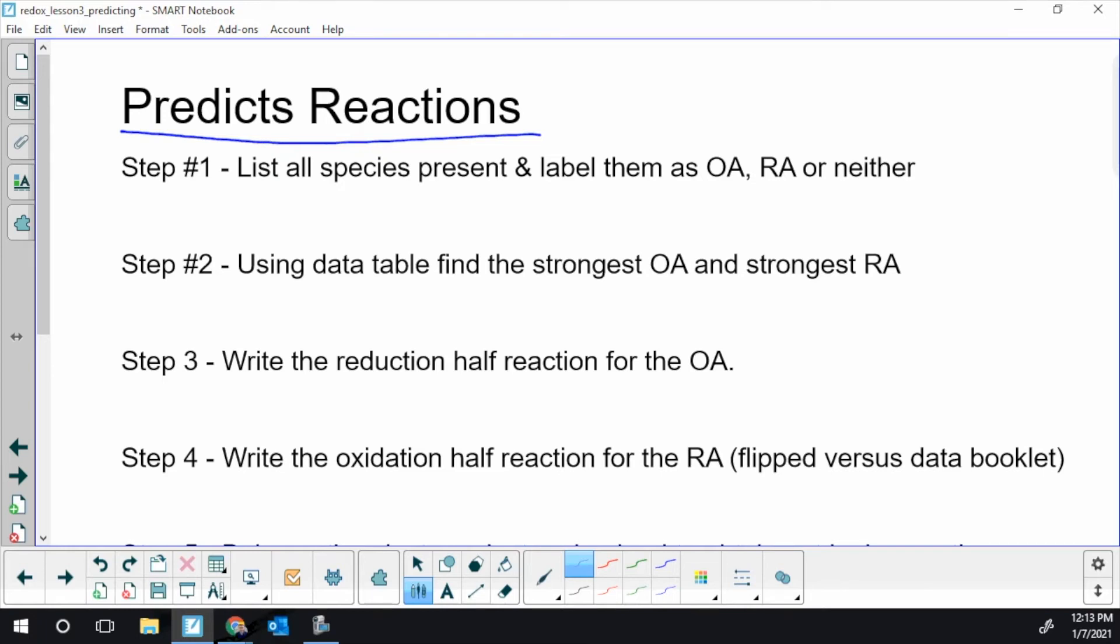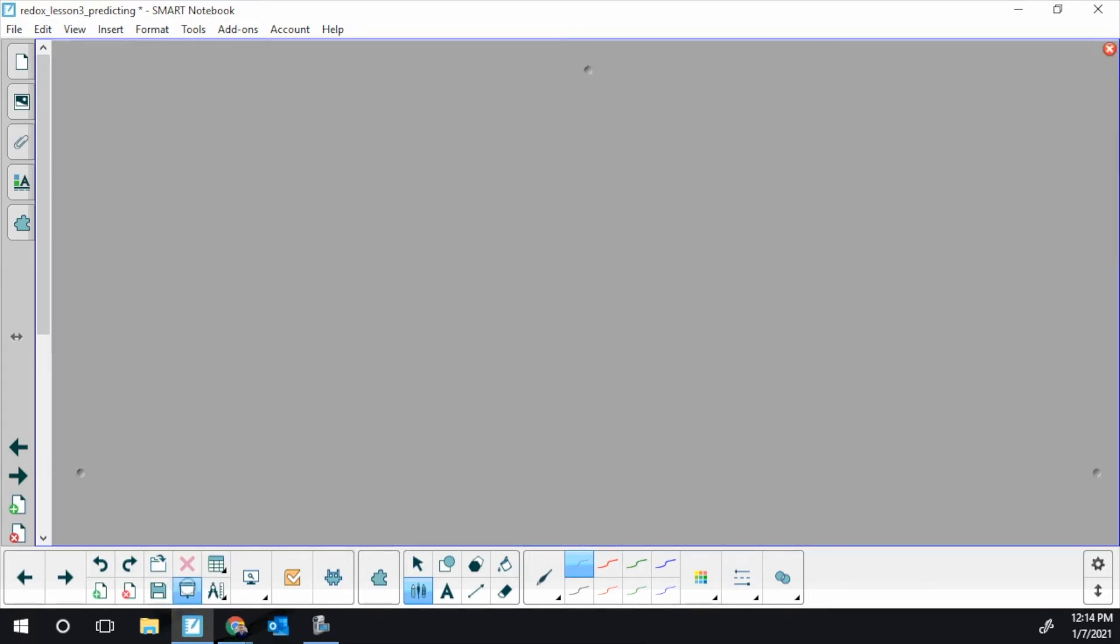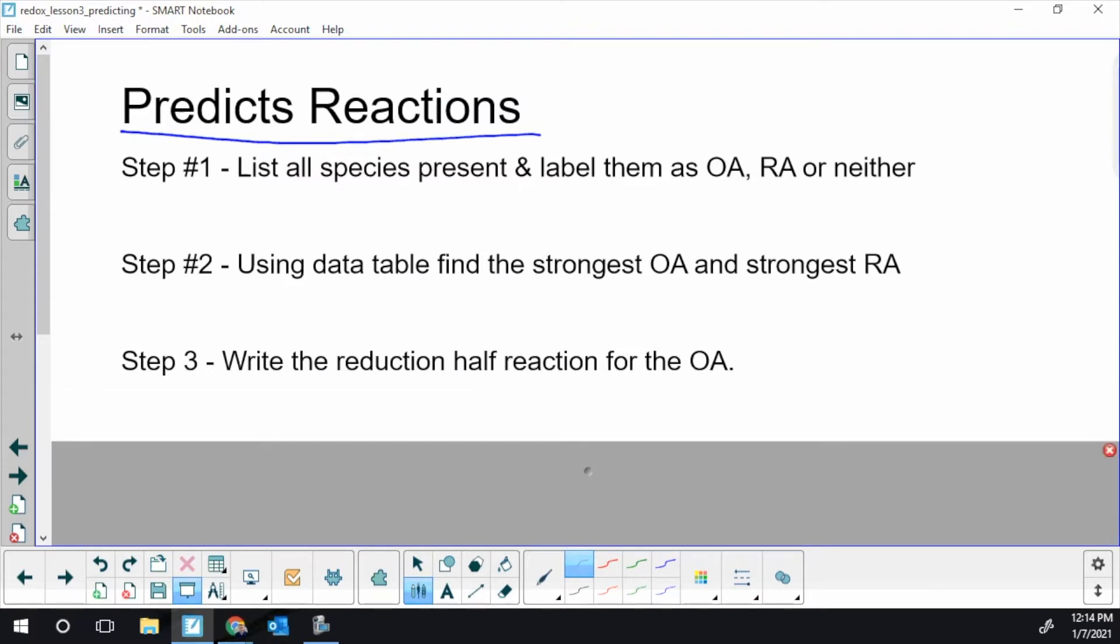Predicting reactions, obviously just predicting redox reactions. Hopefully you have the first heading down. Step one, list all species present and label them as OAs, RAs, or neither.